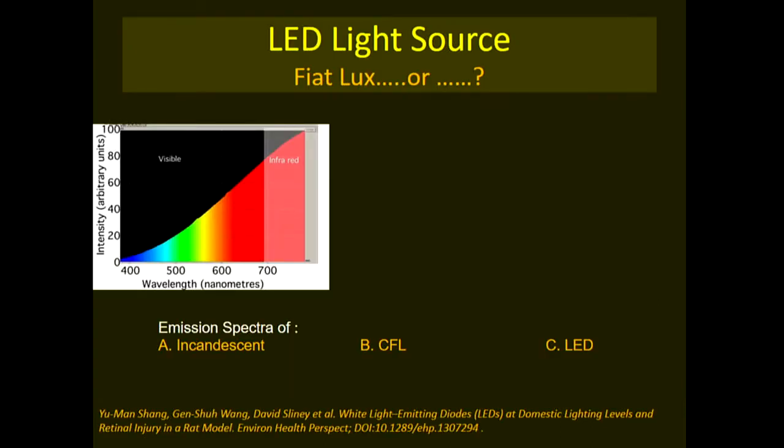The emission spectrum of an incandescent bulb shows very little blue light; emission is mostly in the red and infrared range. Since the eye is insensitive to red and infrared, most of what we see with an incandescent bulb is in the green and yellow range — that's why incandescent bulbs appear yellow. Crucially, blue light emission is minimal.